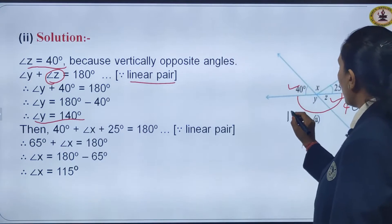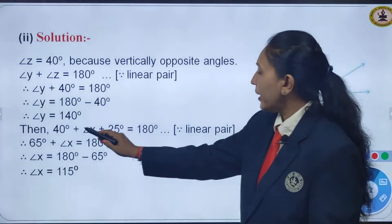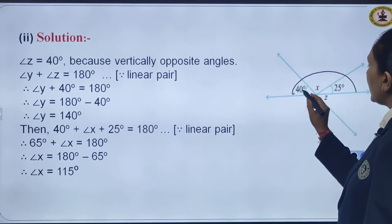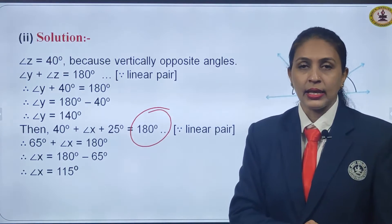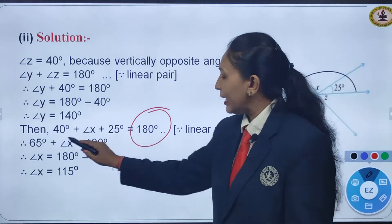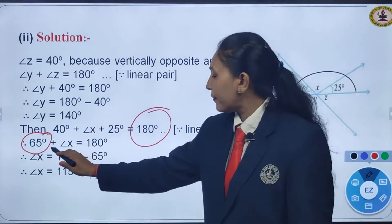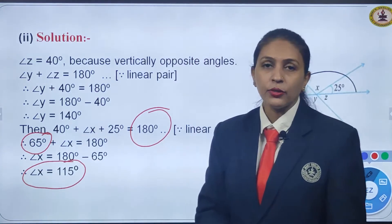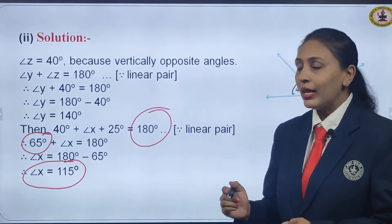We got angle y as 140 degrees. Now, 40 degrees plus x plus 25 degrees also form a linear pair, meaning 40 plus x plus 25 equals 180 degrees. Adding 40 and 25 gives 65 degrees plus angle x equals 180 degrees. Taking 65 to the other side, angle x equals 115 degrees. Using step by step method, we find each angle.